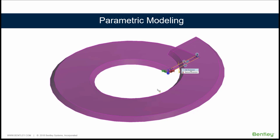Parametric models have a couple of benefits you should know right off the bat. First, it allows you to have lots of different design alternatives — this ramp can have multiple profiles stored, and you can test various sizes and combinations of parameters to determine what's best. Second, you can accommodate change a lot faster. In older workflows, if I pushed a profile along a path and then needed to modify both, I'd have to delete my solid and redo the geometry. Parametric modeling saves time because you can edit the part without recreating it.